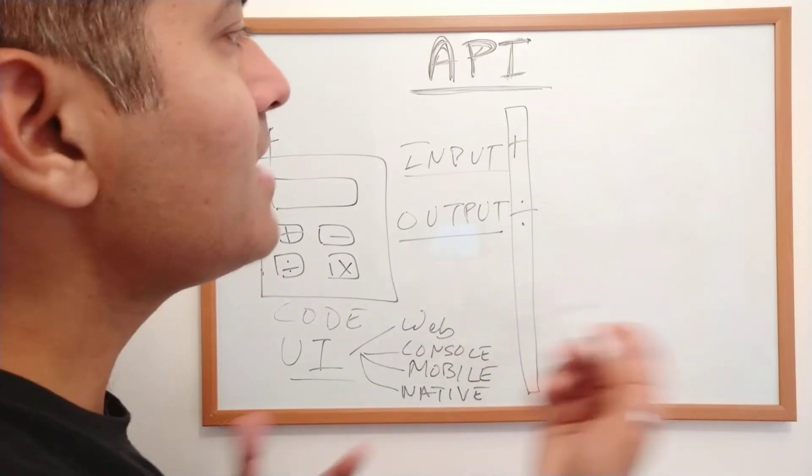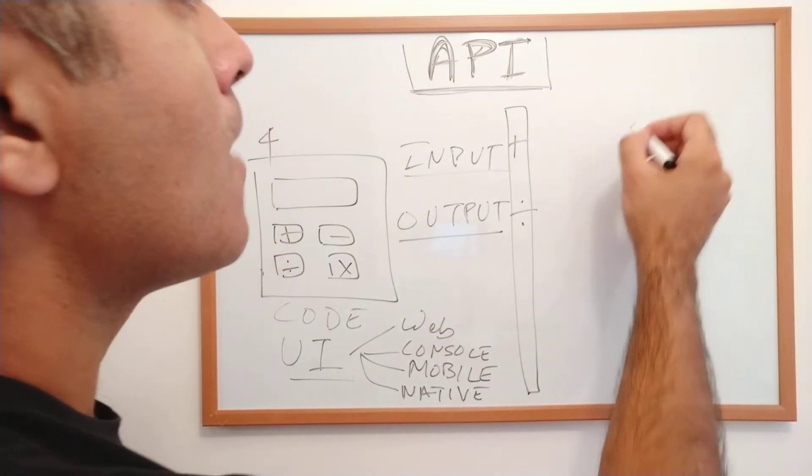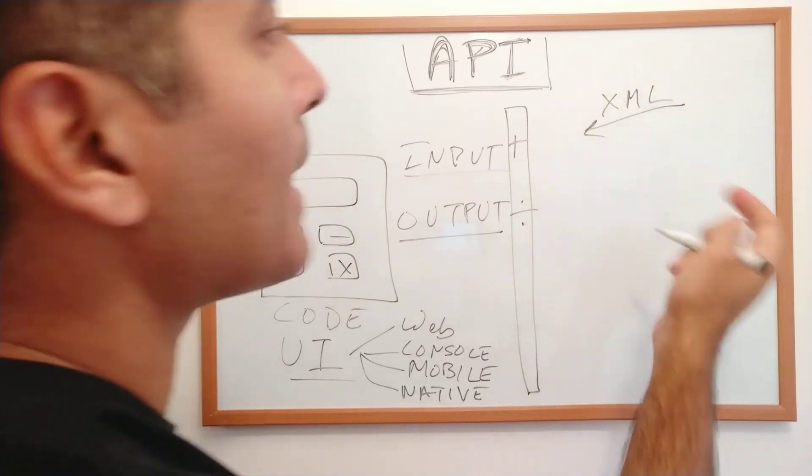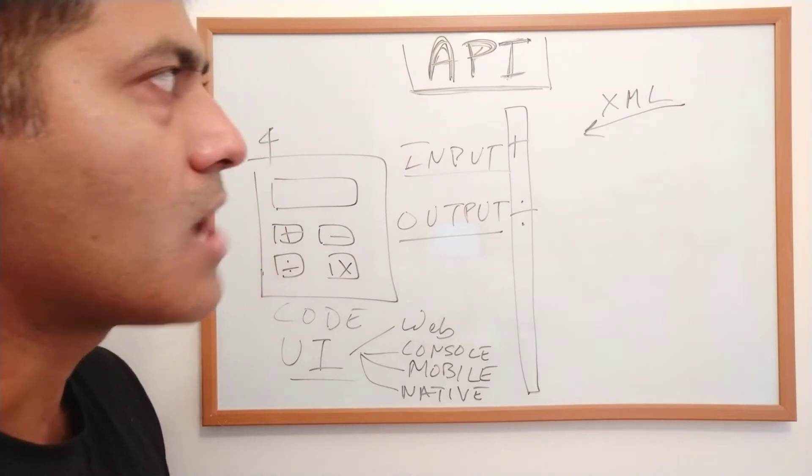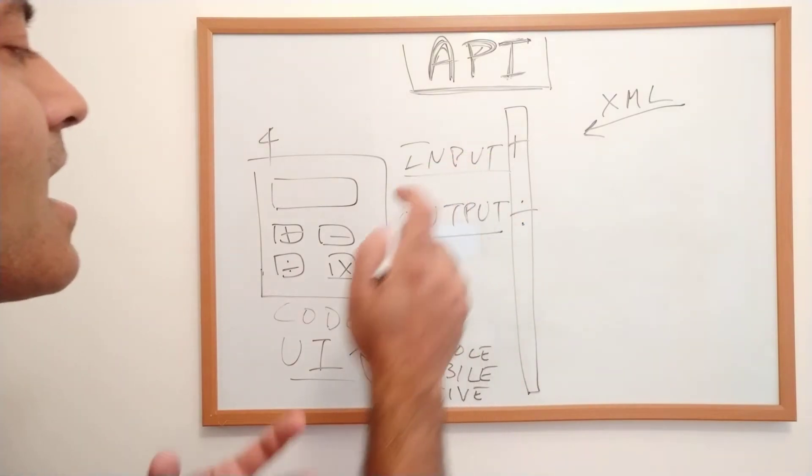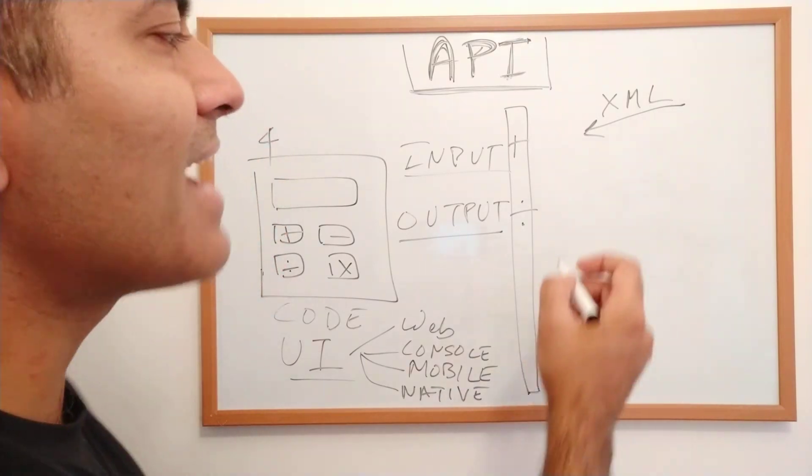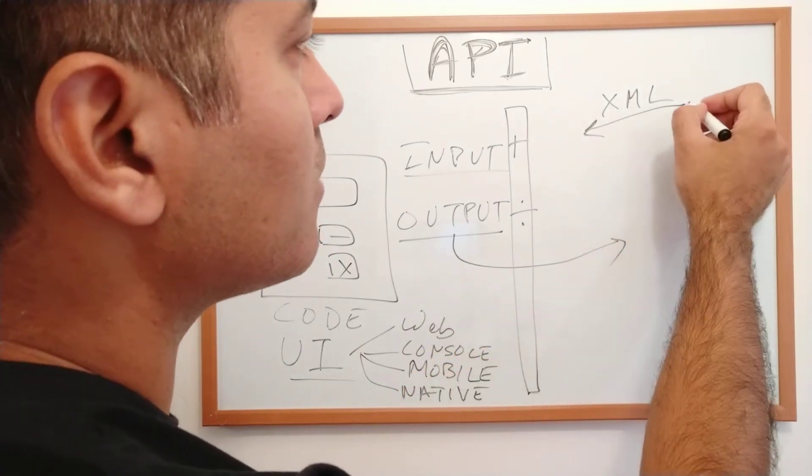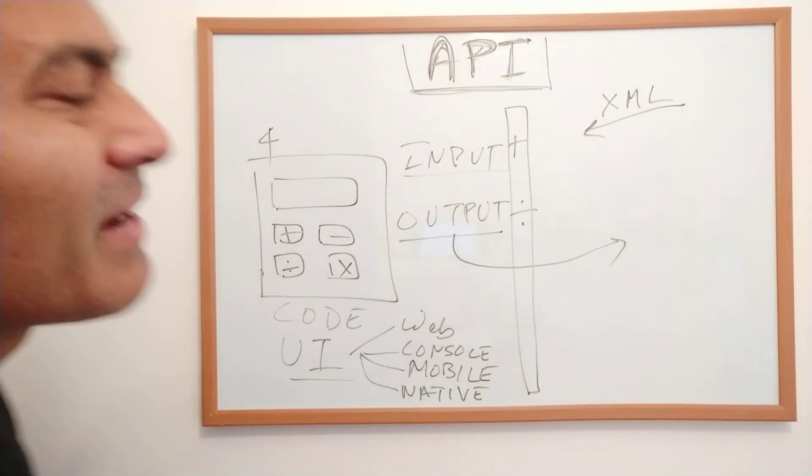With the APIs you create, other services or websites can provide input using this API. They'll interact with your application by sending data, let's say an XML file. This XML file contains the calculations you want to perform - the numbers and the function you want to execute. The application then gives you the output and returns it back. This input and output interaction happens through the application programming interface layer.